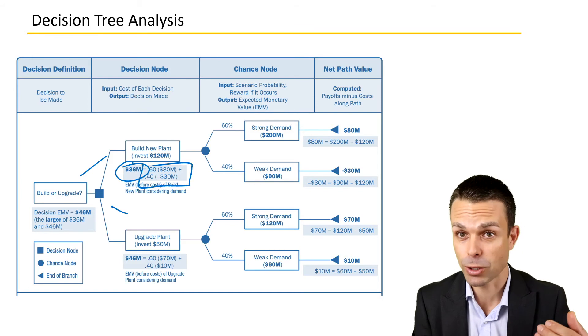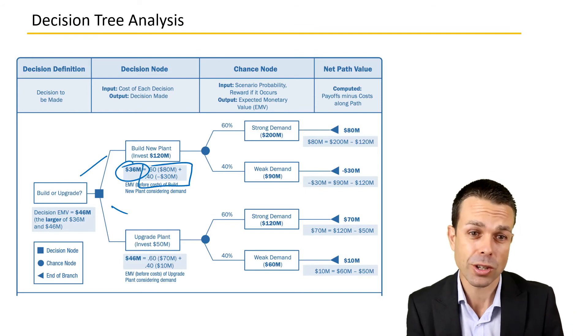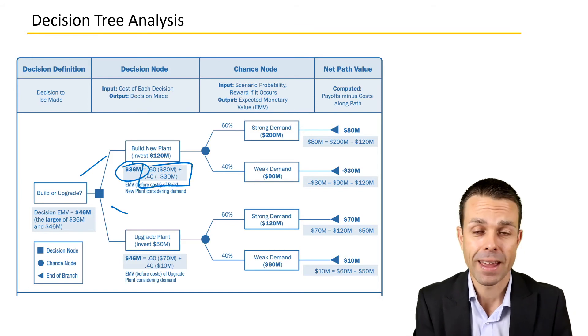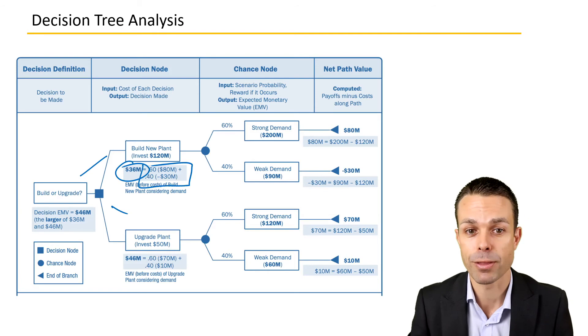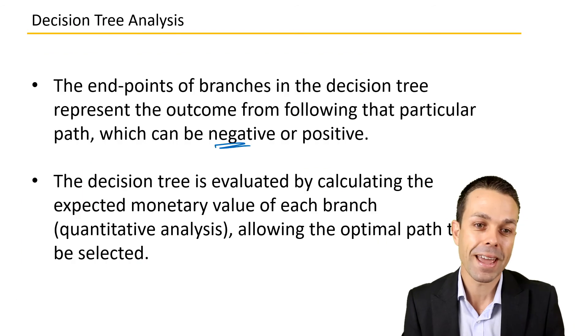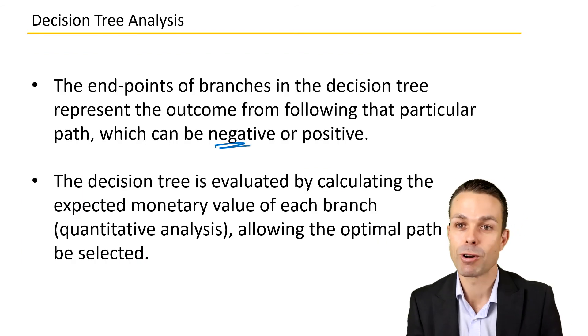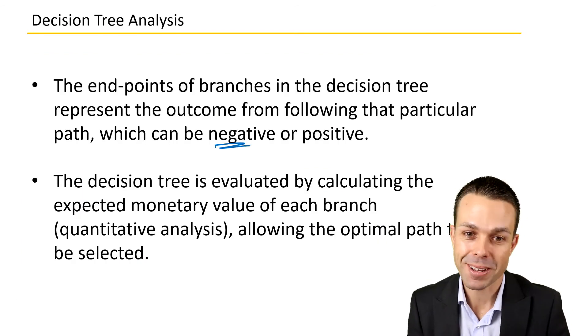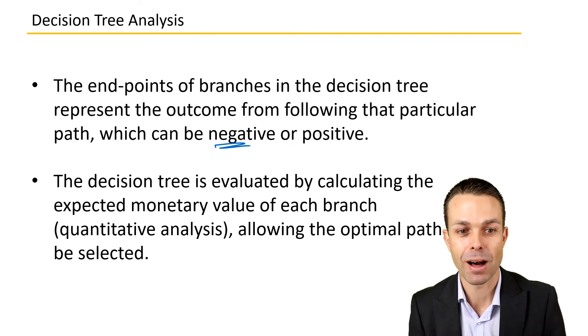We need to know: if something goes wrong, what's the cost of that, and also what's the cost to take that path? The endpoints of the branches in the decision tree represent the outcome from following that particular path, which can be negative or positive.